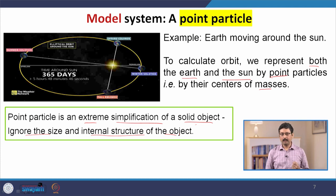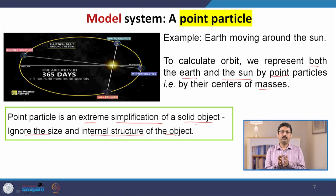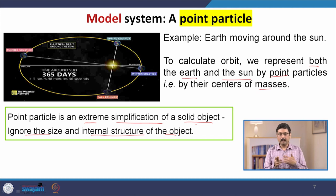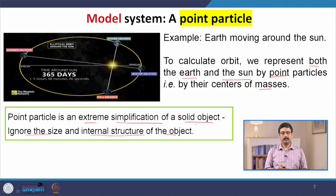You can do that depending on the problem at hand — the same object can be thought of as a point in one situation, but may not be in another. We will see different examples of that kind. So this is just an example of a point particle; anything can be represented by a point particle.